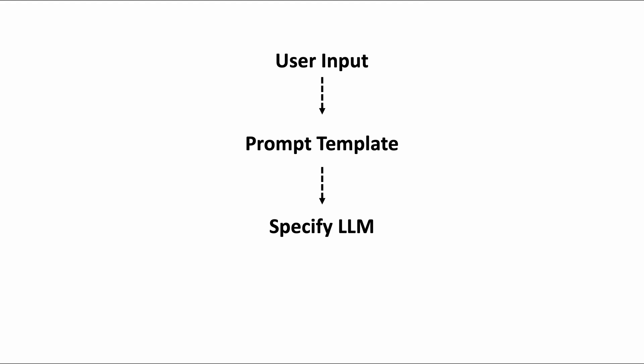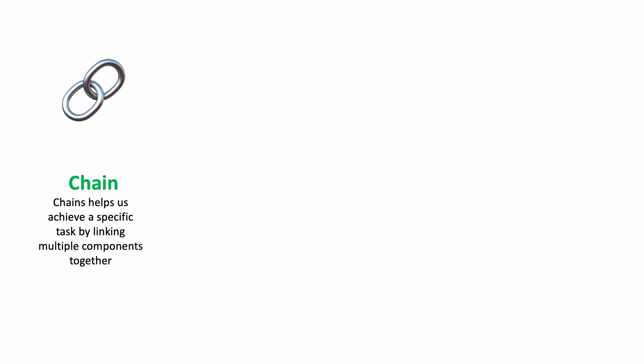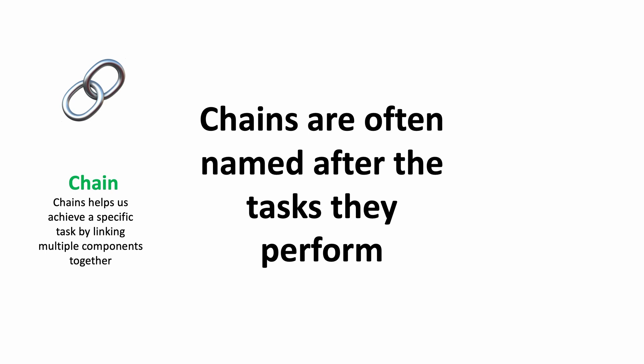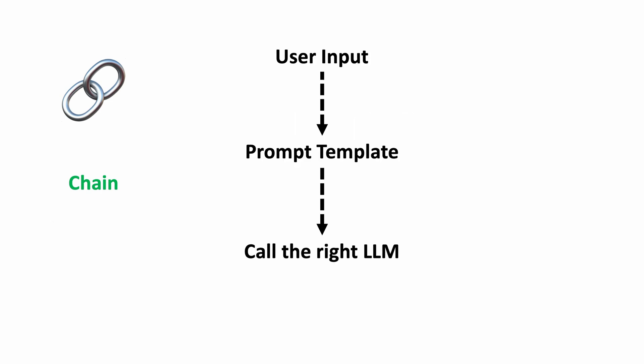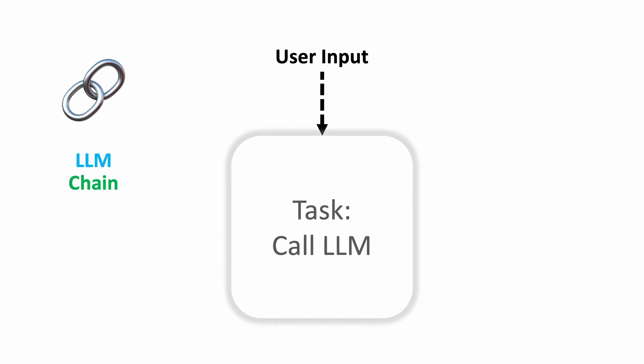Langchain makes it easy where we can link all of these components together by something called chain, LLM chain. Chains are core building blocks of Langchain which can help us achieve a specific task by linking multiple components together. There are many different types of chains available in Langchain and these chains are often named after the tasks they perform. In our earlier example we wanted to call LLM and the chain for that is LLM chain.